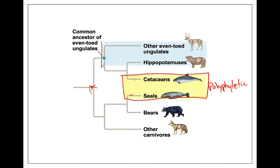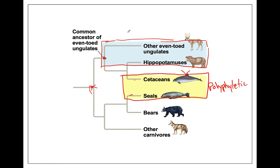Here's another grouping. Let's say we looked at the ungulates, but didn't know that cetaceans are closely related to ungulates, so we're not going to include them. This grouping includes the ancestor of the even-toed ungulates — it's got the hippopotamus and the other ungulates — but excludes one branch. So this is a paraphyletic group, because we have the ancestor and some of the descendants but not all of them.